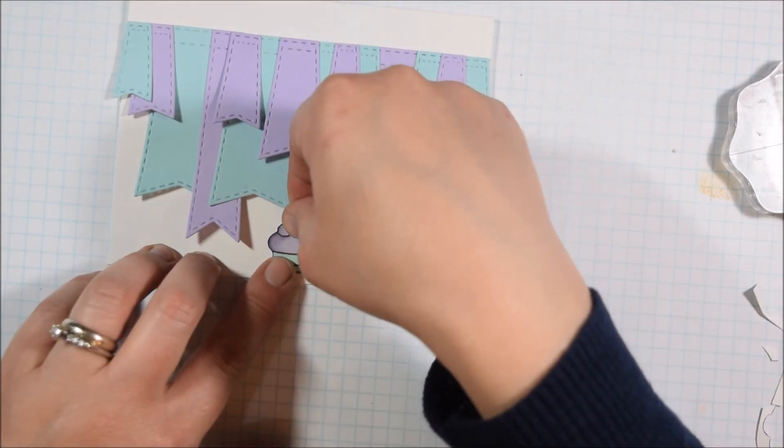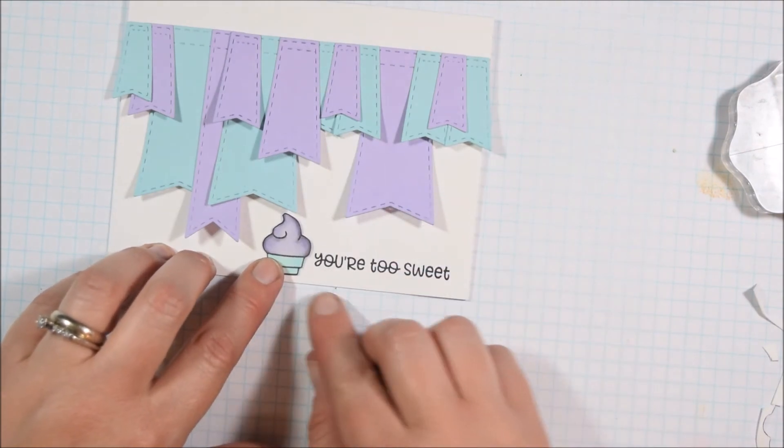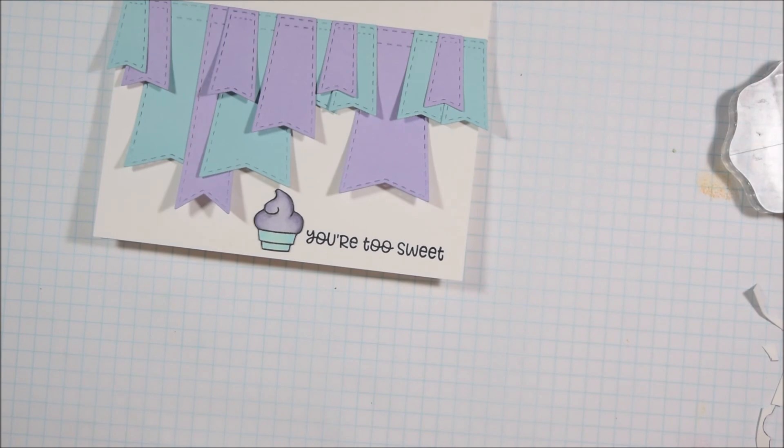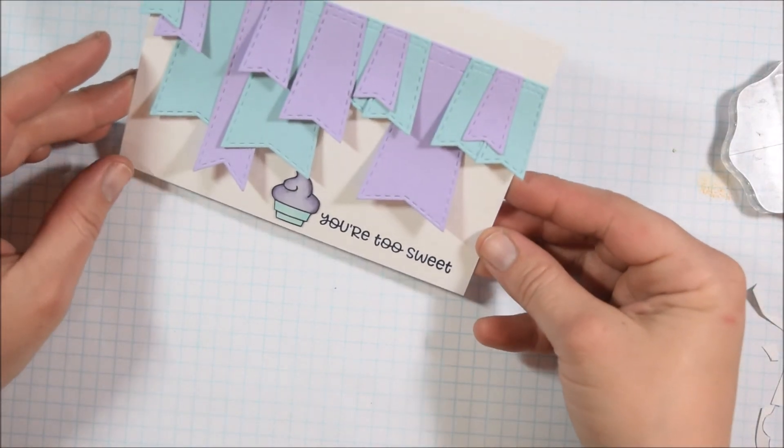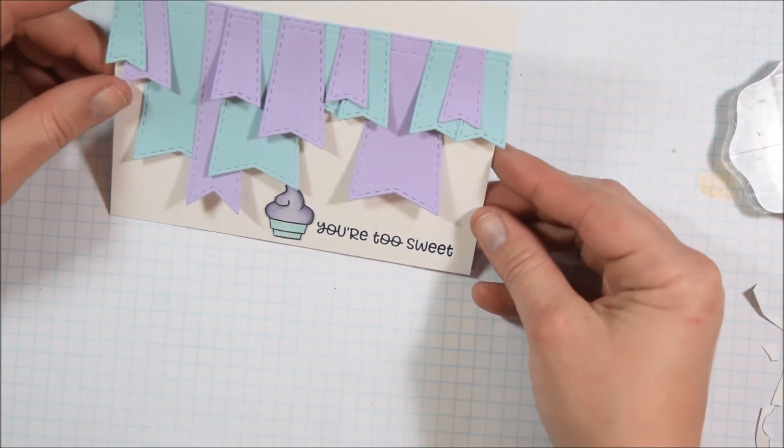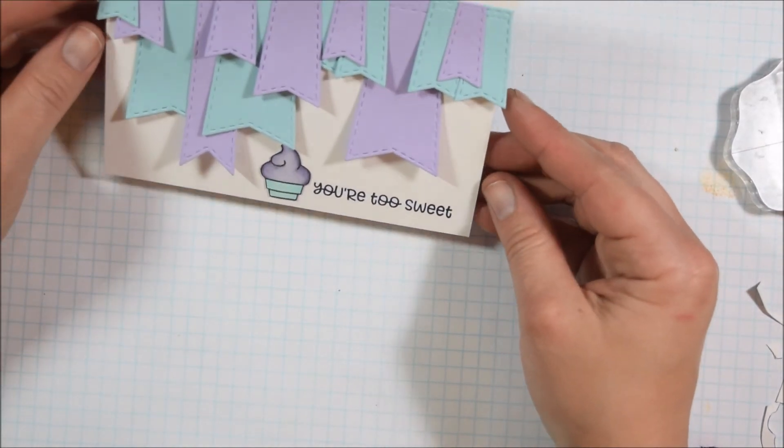I'll add a bit of adhesive there and put it to the left of my sentiment, and that's basically going to be it for this card, except for like I said at this point I just felt like I'd left too much white space at the top, especially considering that my ice cream looks a little squished down there at the bottom.